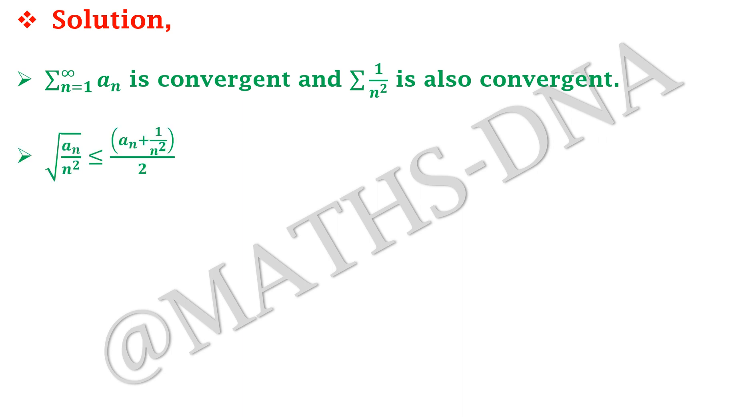Now we just simplify it: under root a_n upon n square will be less than equals to a_n plus 1 upon n square divided by 2. And thus by comparison test, summation n running from 1 to infinity under root a_n upon n is also convergent.